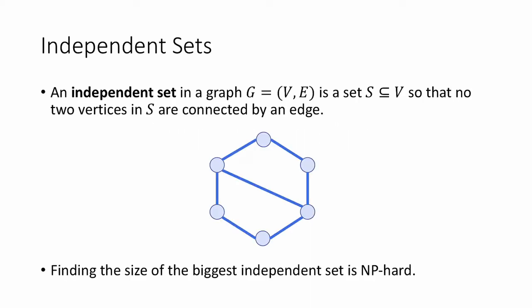An independent set in a graph G with vertices V and edges E is a set S of the vertices so that no two vertices in S are connected by an edge. For example, in this graph, here's an independent set. This happens to be the biggest independent set in this graph. However, in general, finding the size of the biggest independent set is NP-hard.